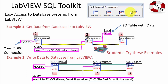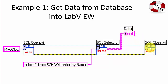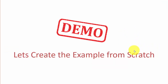Next I will go through some simple examples inside LabVIEW. The first example is how to write data into the database from LabVIEW. Let's start with Example 1 where we get data from the database into LabVIEW. You use three functions: SQL Open to open the connection, SQL Select to get the data, and SQL Close to close the connection when finished. Let's create this example from scratch within LabVIEW.